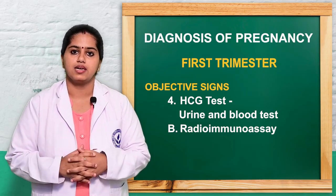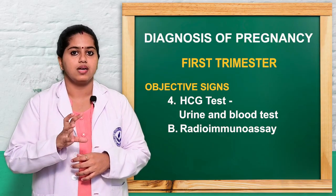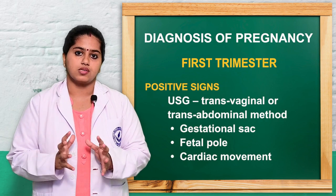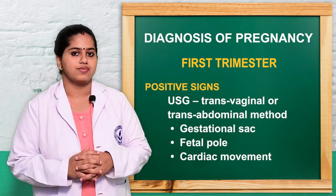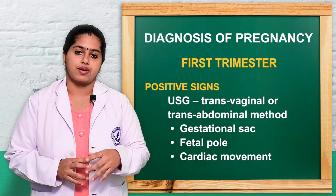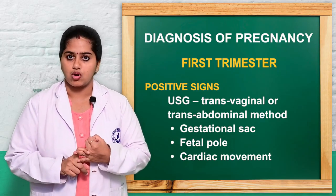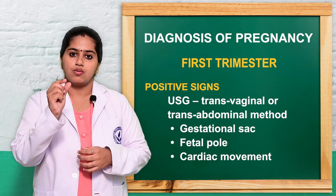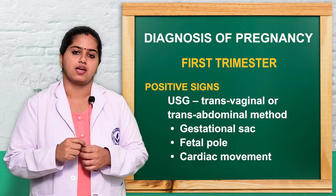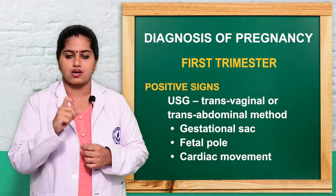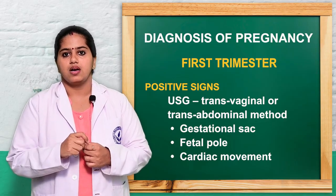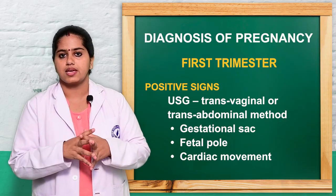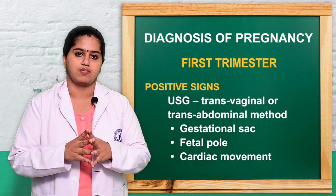The positive sign in the first trimester is ultrasonography. Using transvaginal or transabdominal method, we can visualize whether the gestational sac is present, whether the fetal pole is present, whether cardiac movement is present (which occurs from the fifth week), and how the fetus is developing. All of these can be assessed in the first trimester.